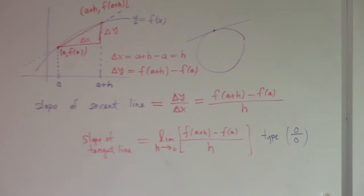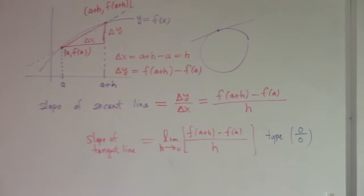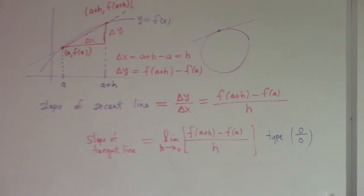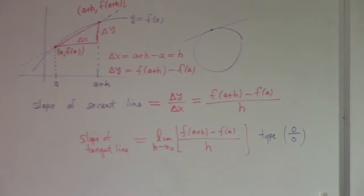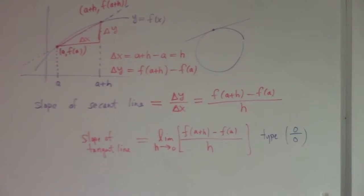So this has type zero over zero. It's an indeterminate form. Why do we say indeterminate form? Simply because it could be different things depending on the details of how you work it out. It could be one, it could be two, it could be zero, it could be infinity, it could be minus infinity. It might not exist. You just don't know until you work out the details when your limit has type zero over zero.